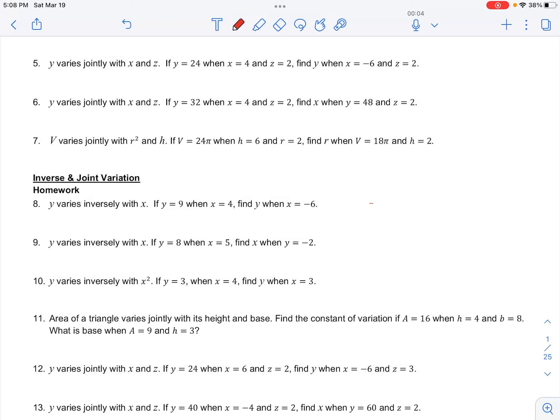In number 7, in your class for inverse and joint variation, I ask you to find r when v equals 18 pi and h equals 2. So we have that v varies jointly with r squared and h, so it's multiplied by some constant of variation.